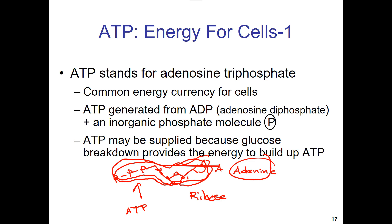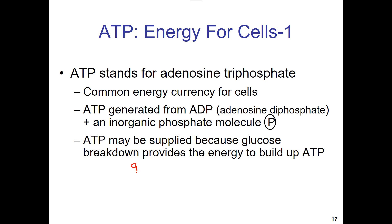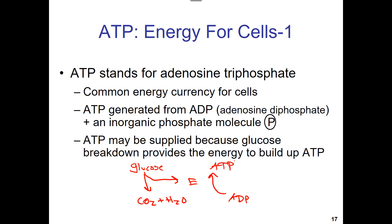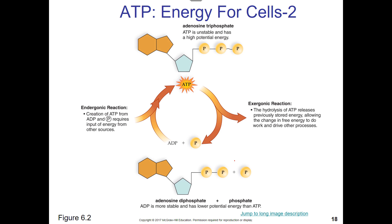In one of the next chapters, we'll learn how we make ATP by burning glucose. Glucose falling downhill to the carbon dioxide and water that plants use to make it gives off energy, and we can use that energy to build ADP up into ATP. That's an example of coupling — this is cellular respiration, which we'll learn about later.